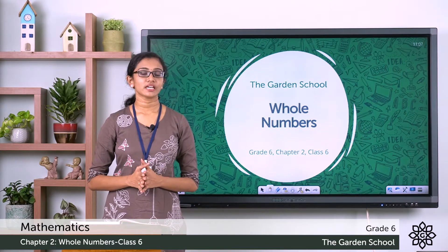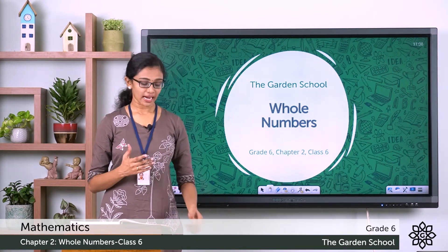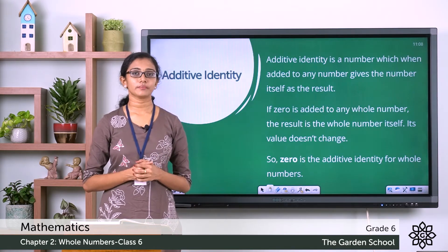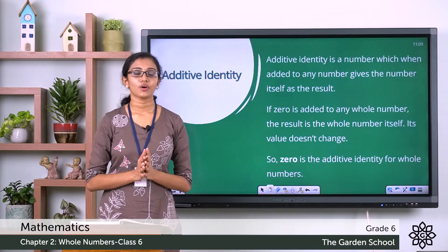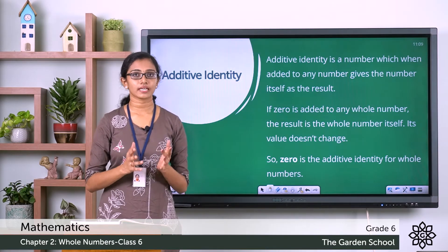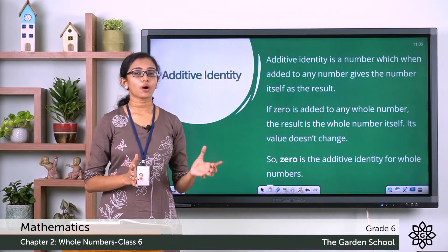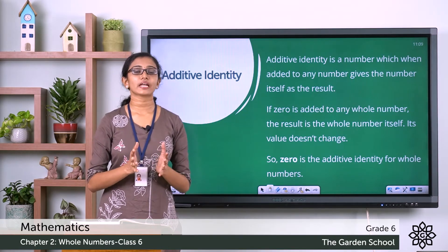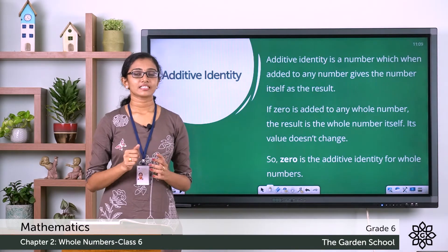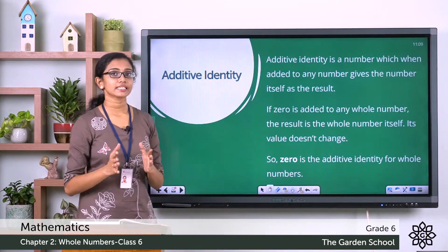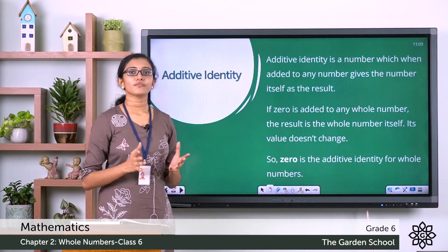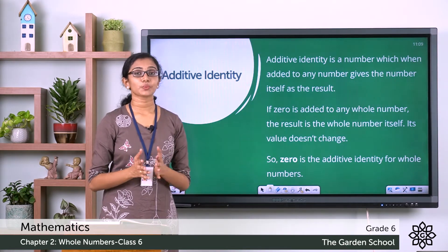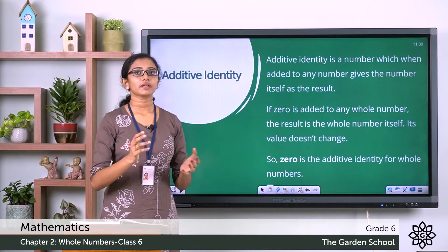Let's see how this can be applied in the case of addition, subtraction, and multiplication of whole numbers. The additive identity means there is an identity element — a number that can be added to a whole number and the result will be that whole number itself. Additive identity is a number which, when added to any number, gives the number itself as the result.